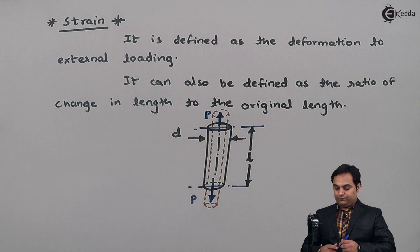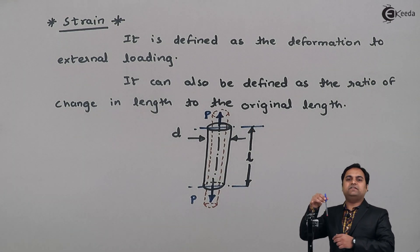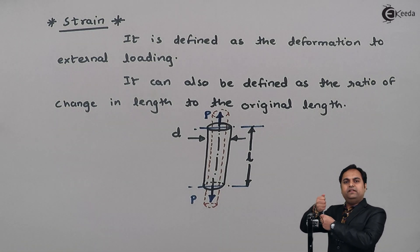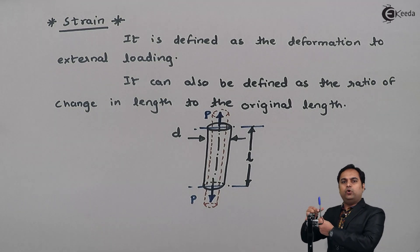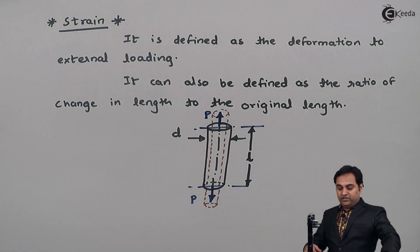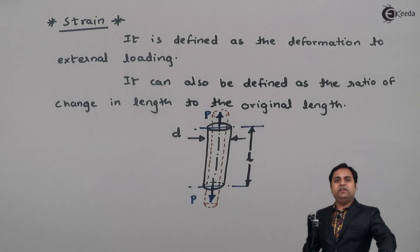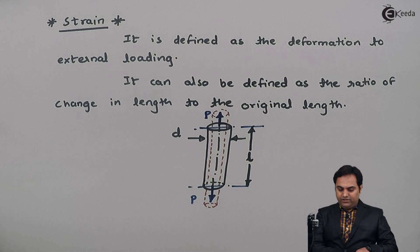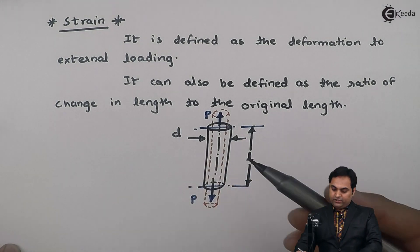When we are pulling a rod — I can take this pen as an example — if I am pulling this pen, then the length of this pen will go on increasing and its diameter will go on decreasing. This physical deformation which we see in an object is called strain.